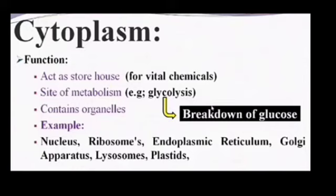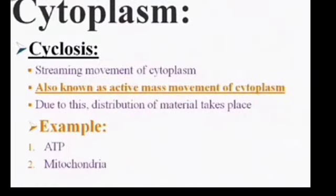Active mass movement of cytoplasm. What are we doing? Cyclosis. Active mass movement of cytoplasm is also known as cyclosis. It is the streaming movement of cytoplasm. Due to this, distribution of materials takes place. For example, ATP is produced by mitochondria. This is also called food storage area. This is also called cytoplasm.